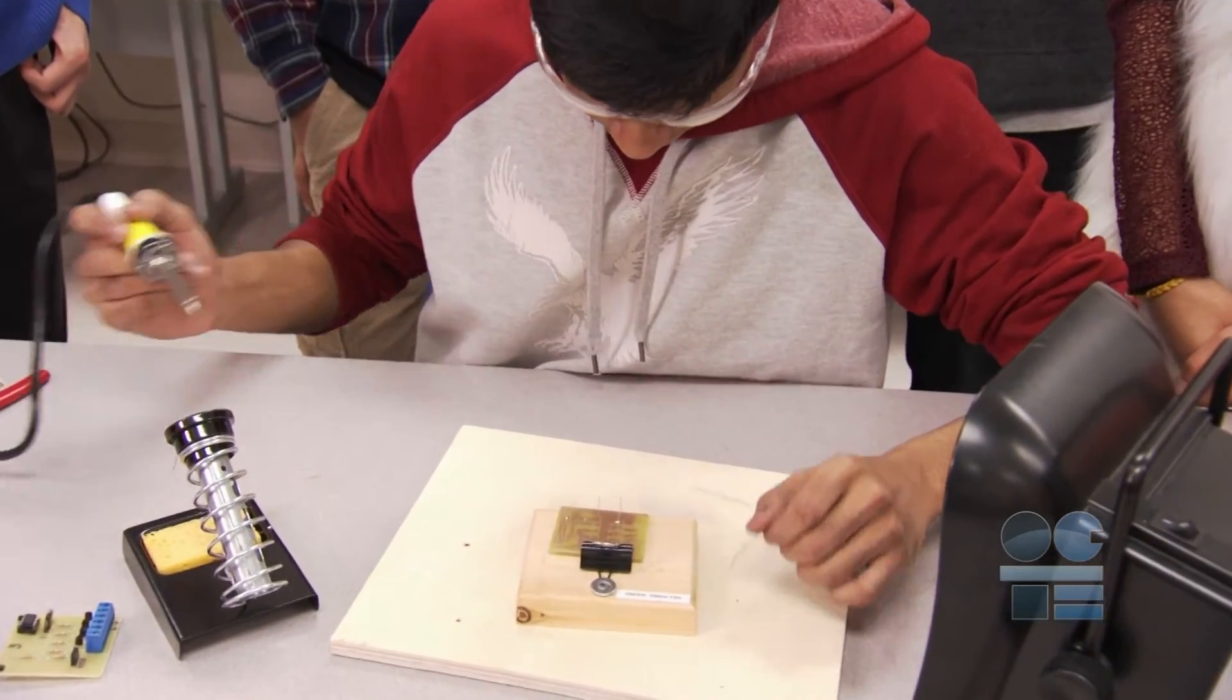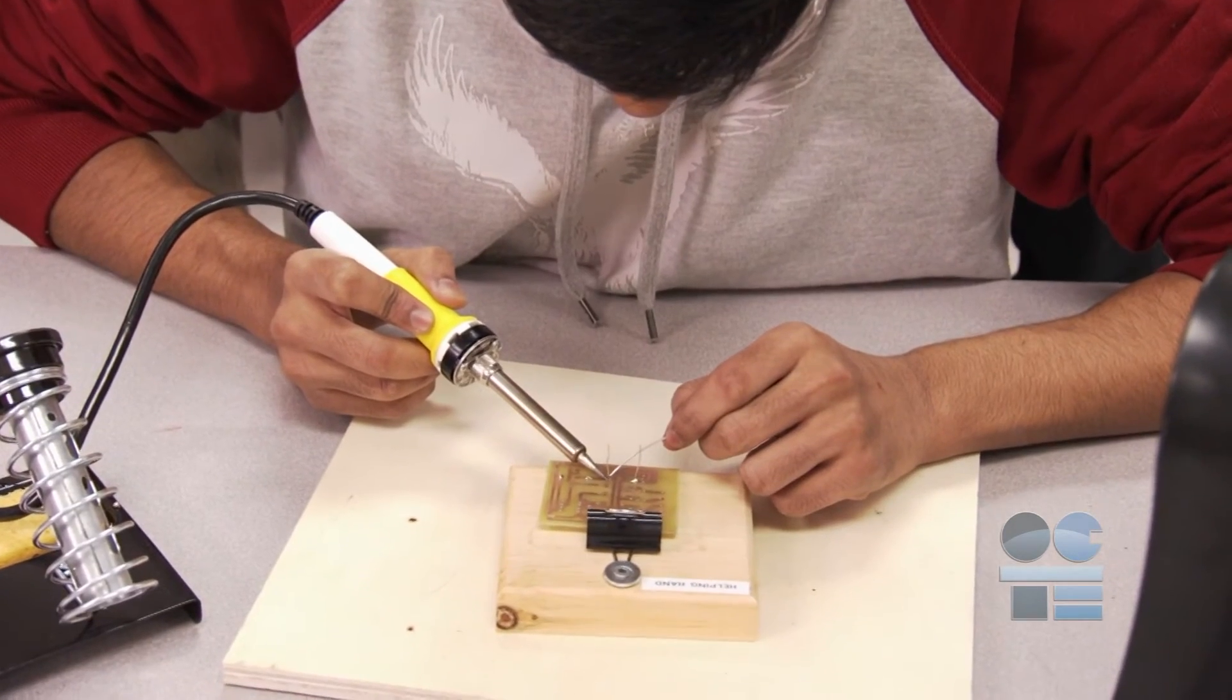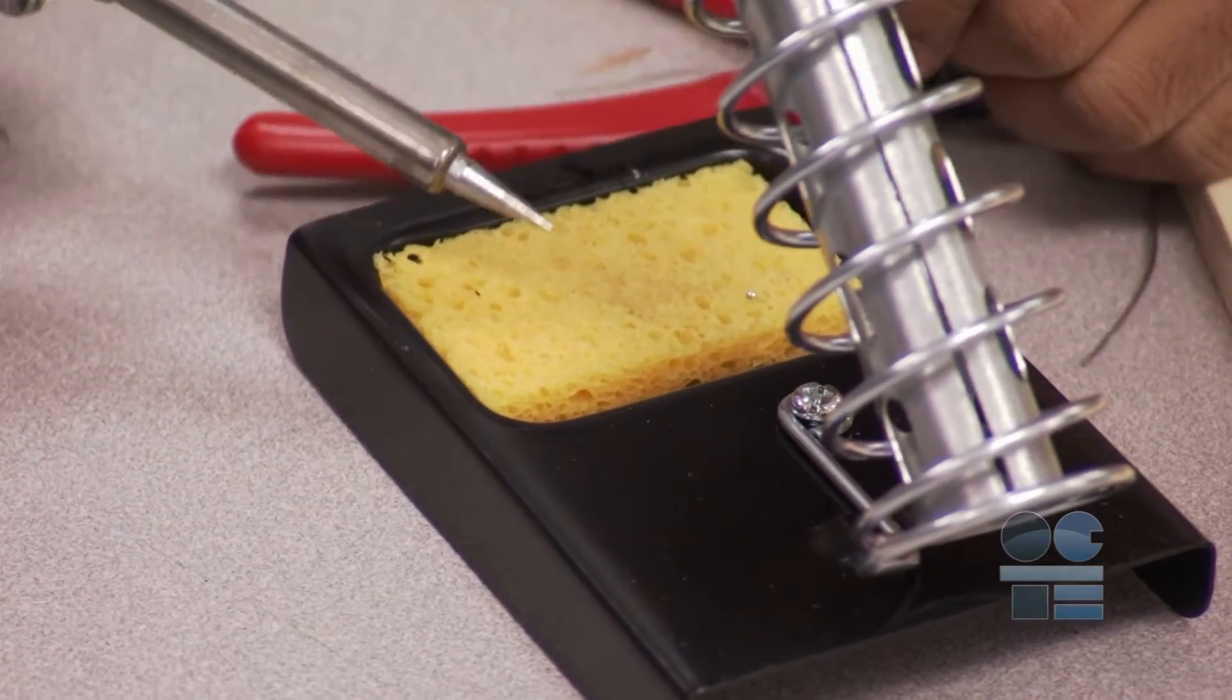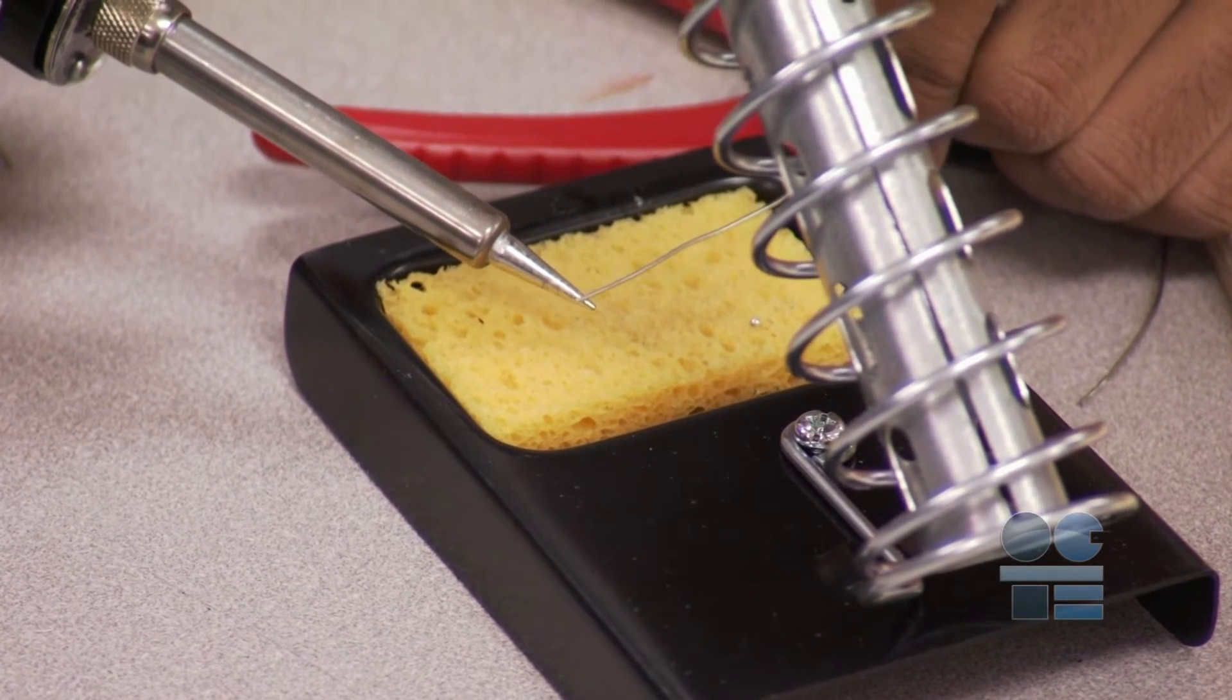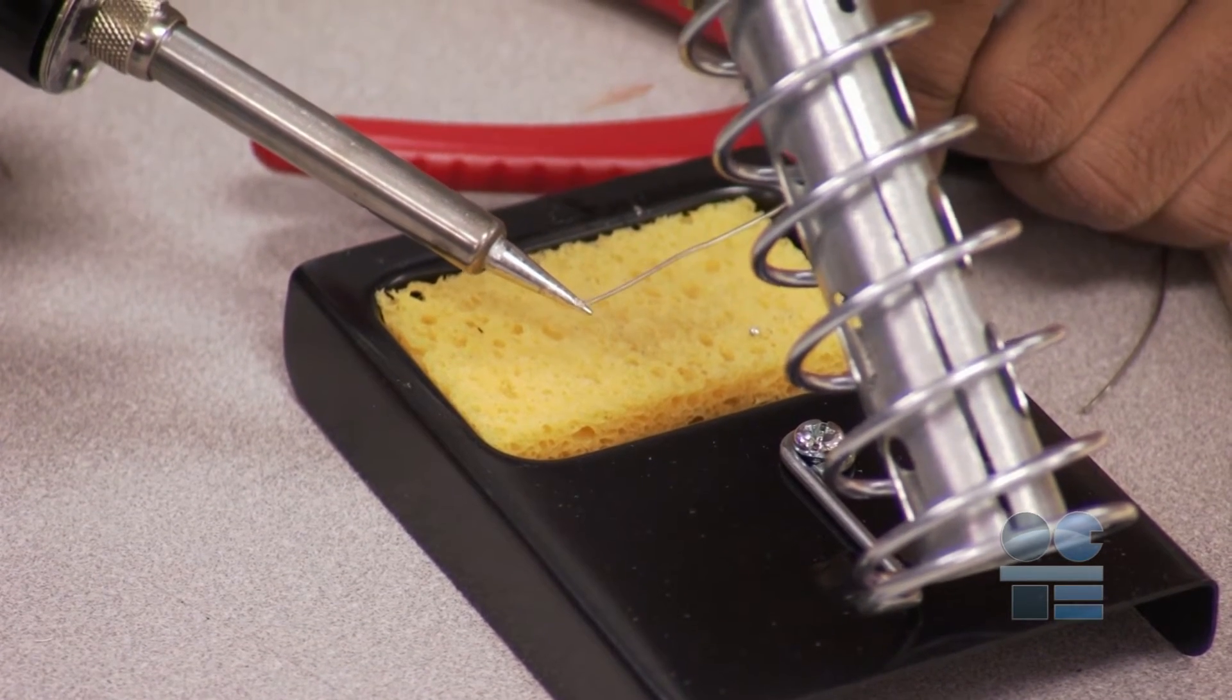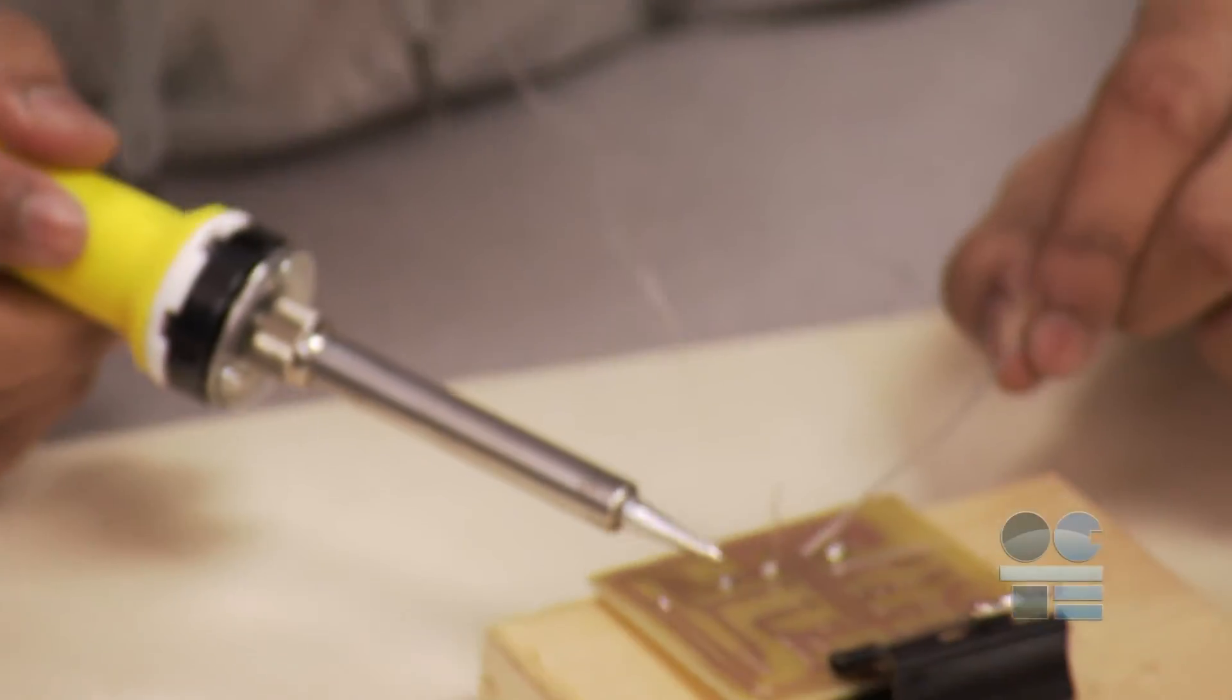Make sure you've assembled all the components you need in one spot before starting the job, so you don't leave a hot iron alone. The tip of the iron should always have a coating of solder on it to protect from corrosion. When we are ready to solder, we clean up the tip with the wet sponge and add more solder. This helps in the transfer of heat.